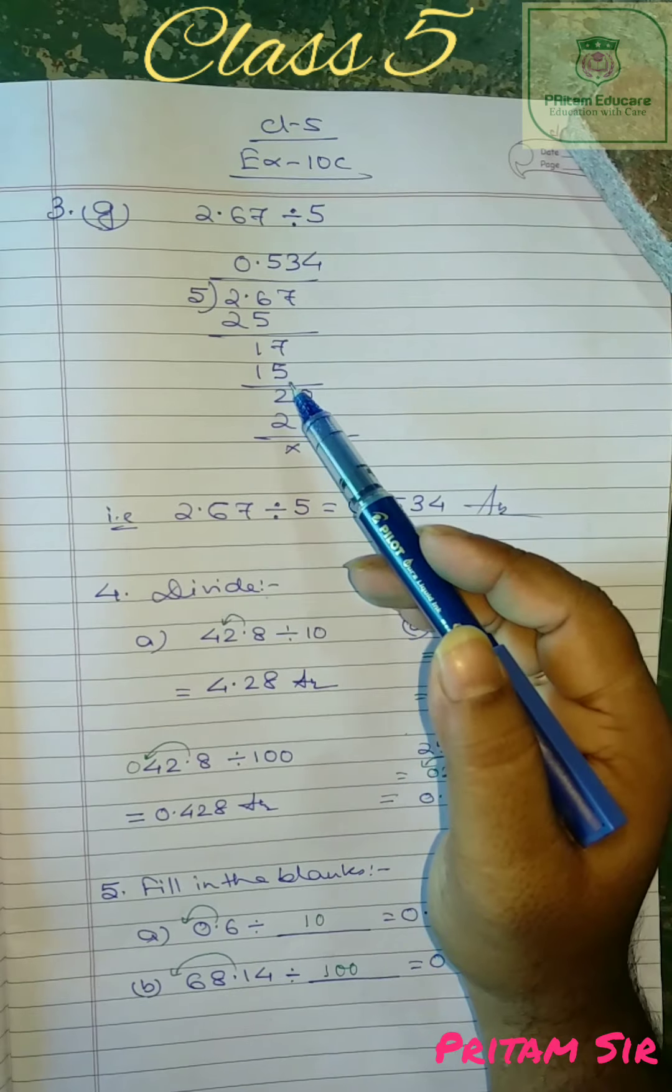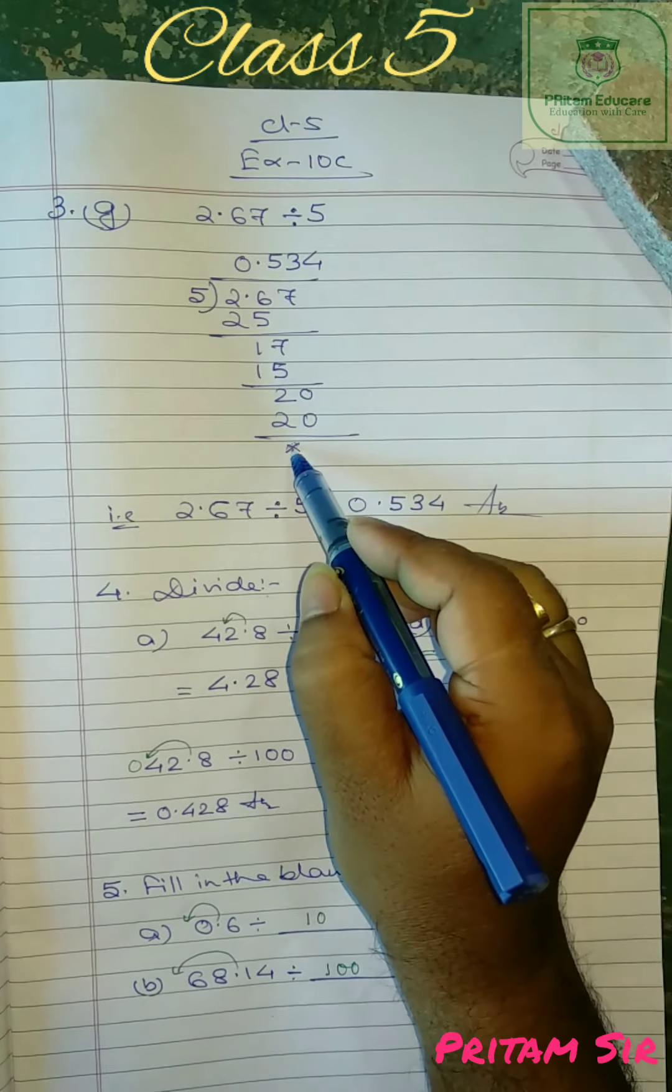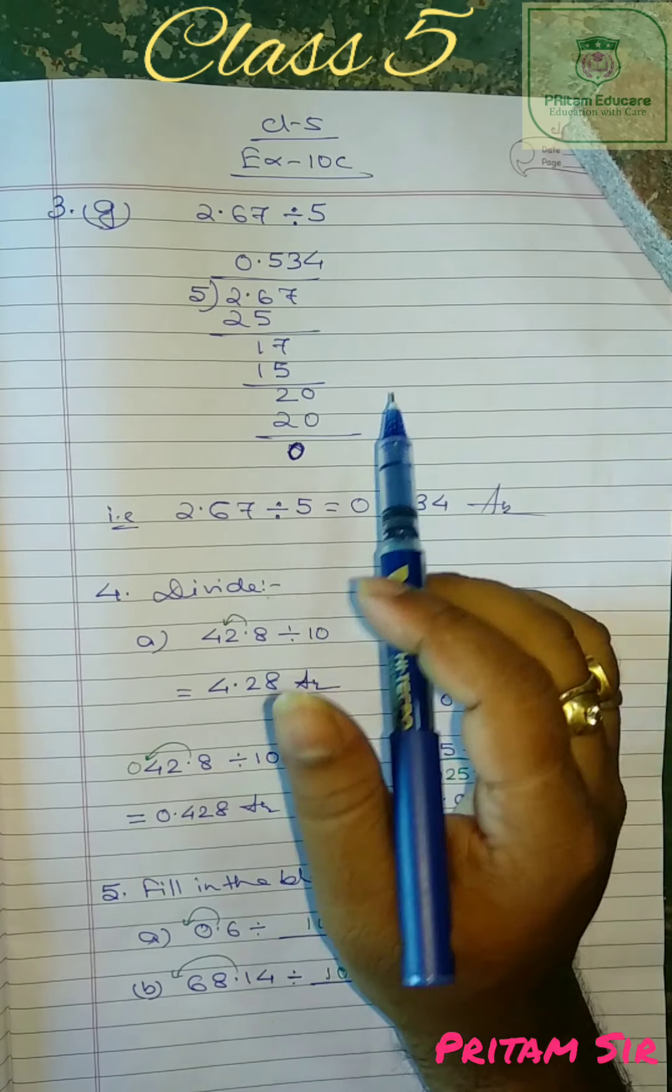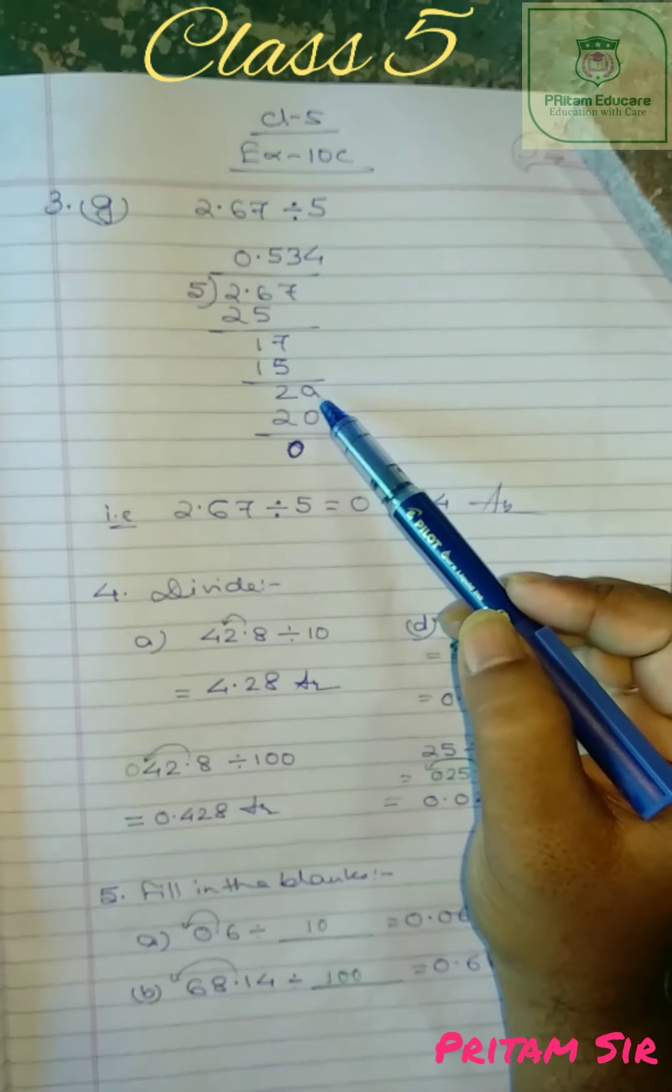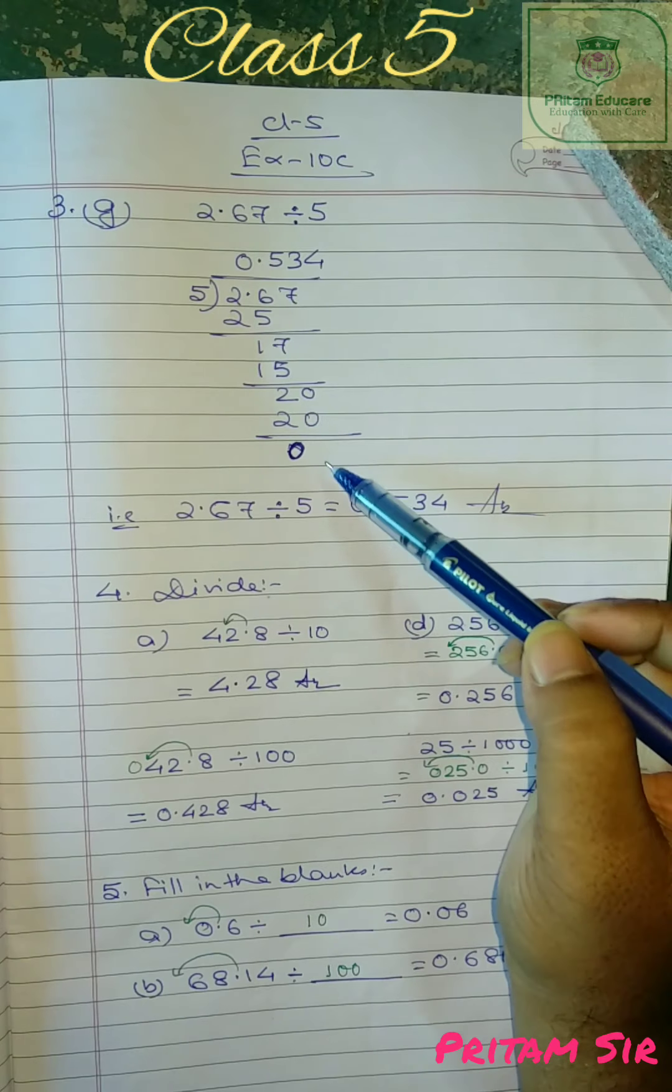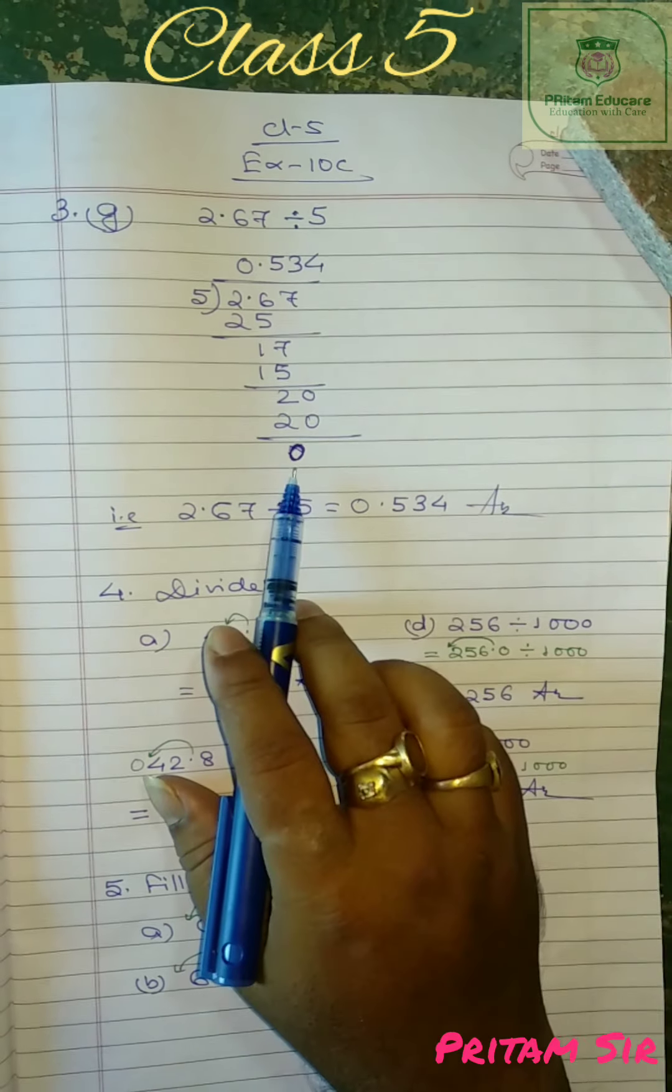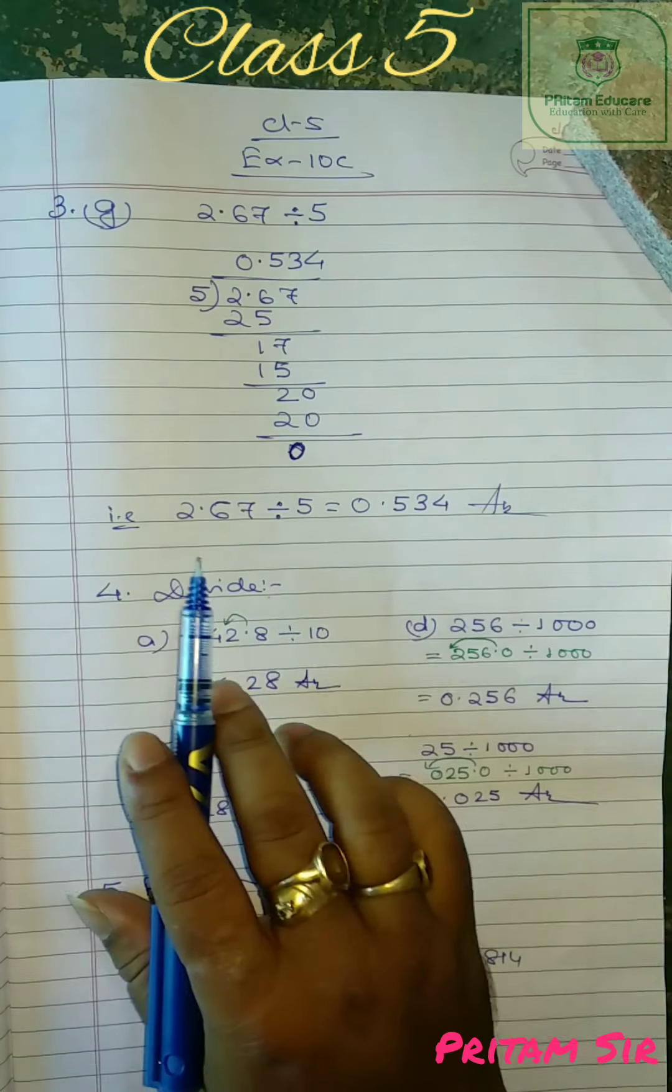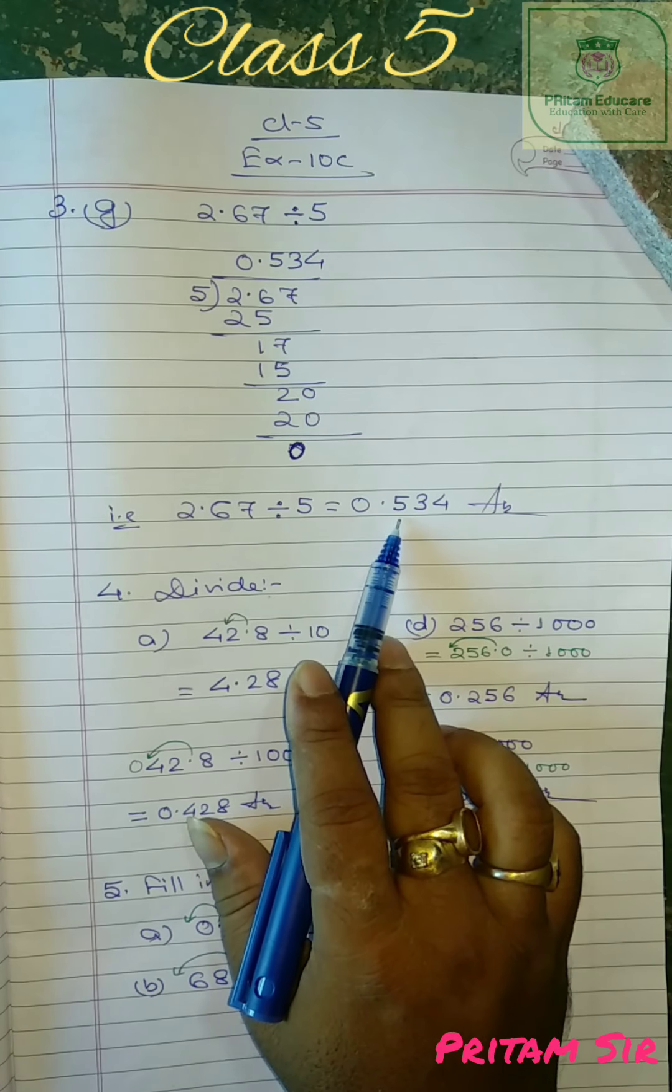For decimal, here 0. Again if you need again 0 like this, you can continue till your remainder is not 0, till your remainder is nil. So now 2.67 divided by 5 equal to 0.534.